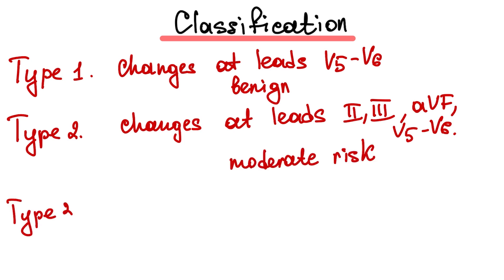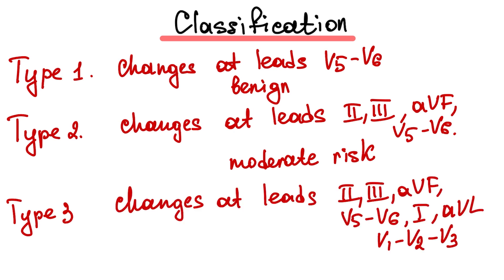Type 3 early repolarization features are noted in inferior lateral, lateral and right chest leads. And this type is associated with highest risk of malignant arrhythmias.